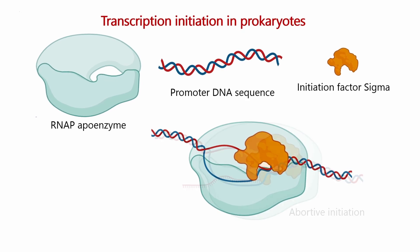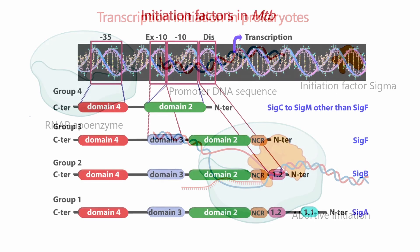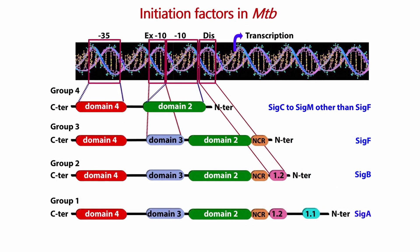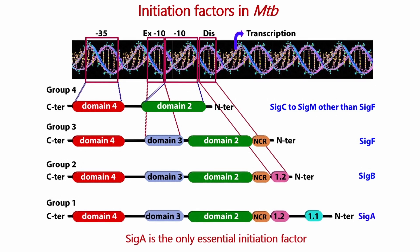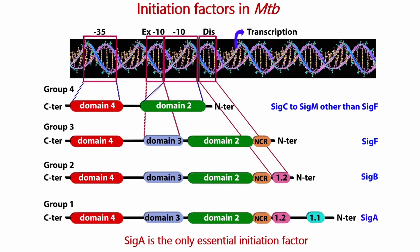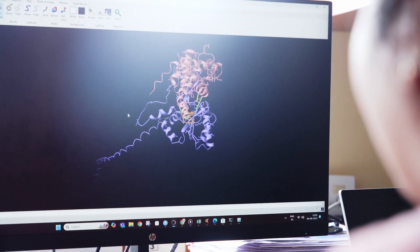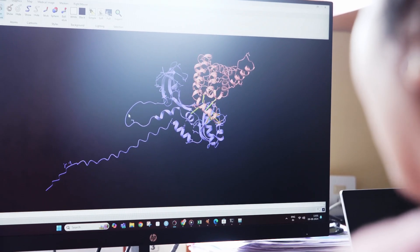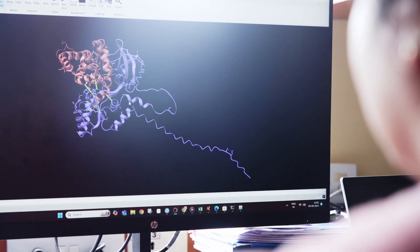Transcription mainly occurs in three phases: initiation, elongation, and termination. We are right now focusing on initiation and elongation. The key players in these two processes are sigma factors, NUS proteins, and of course RNA polymerase. How RNA polymerase, sigma factors, and NUS proteins together orchestrate transcription under different stress conditions is what the lab is looking at right now.